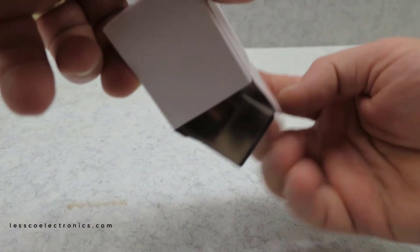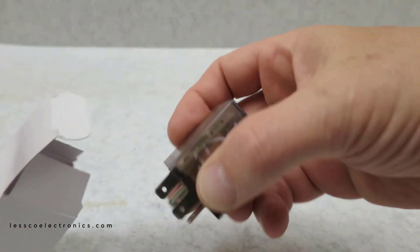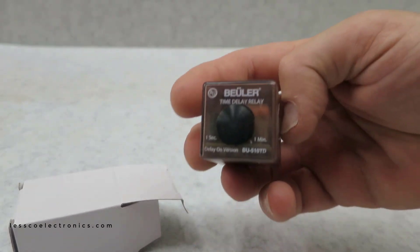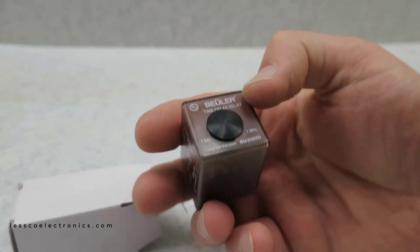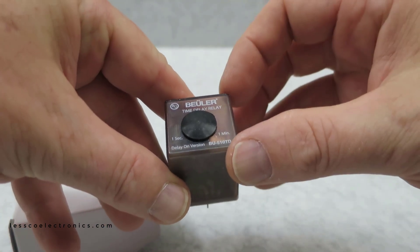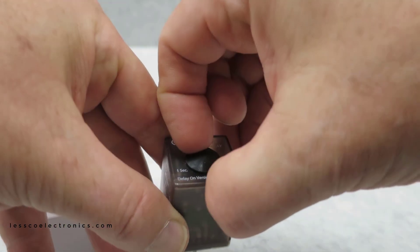What's in the box? Take a look. I know somebody's going to be wanting one of these. It's a Bueller time delay relay, one second to one minute programmable.